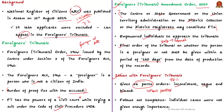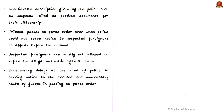For example, most orders followed a set template — only the names of persons, police stations, and dates were changed. This shows that individual cases were not given enough importance. The authors also doubted the descriptions given by police in many cases, such as suspects failing to produce documents for citizenship. Considering the seriousness of citizenship, it is hard to believe that hundreds of people failed to provide proof.